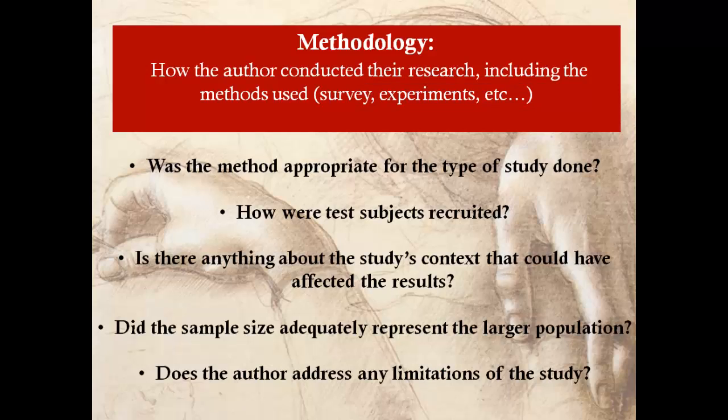The methodology section, or methods section, tells you how the authors went about doing their research. The methodology section should be detailed enough that another researcher could replicate the study described. When you read through the methodology section, think about the following: Was the method appropriate for the type of study done? How were the test subjects recruited? Is there anything about the study's context that could have affected the results? Did the sample size adequately represent the larger population? Does the author address any limitations of the study?